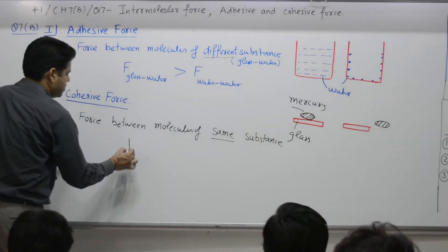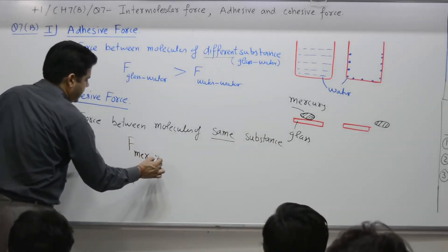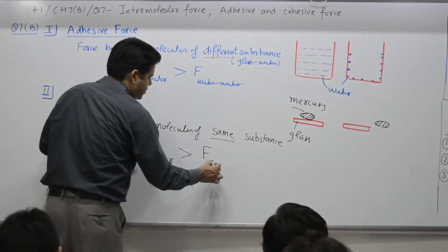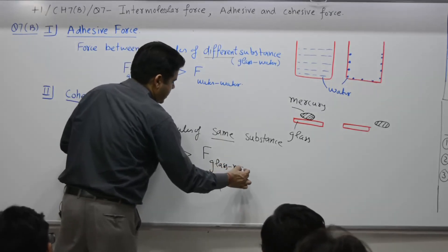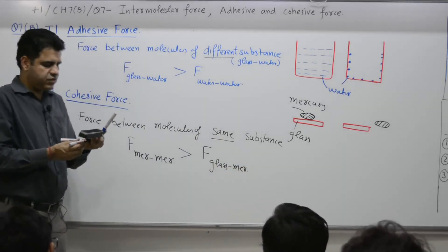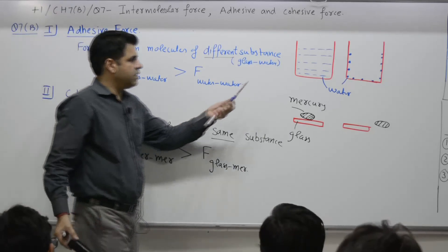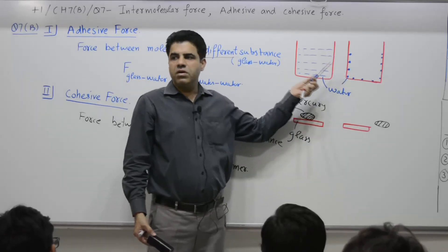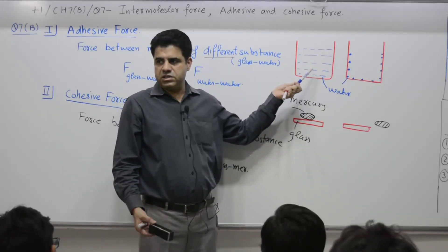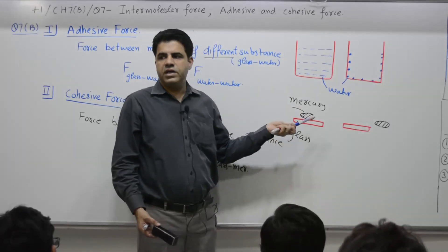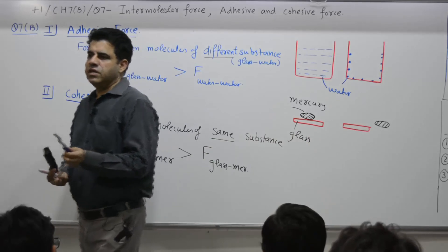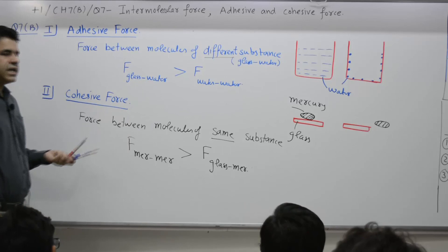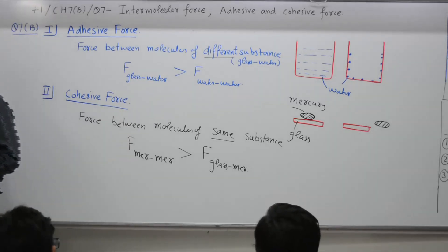Force between mercury molecules is more in comparison to force between glass and mercury. That is why water will wet glass but mercury won't wet the glass. This is a two-mark question plus one example. Why water wets glass and why mercury won't wet glass? The reason is based on two forces: first on the basis of adhesive force, second explanation on the basis of cohesive force.